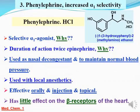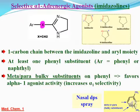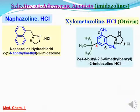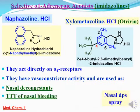الـ Naphazoline بيكون له تأثير عالي على الـ alpha وليه little effect على الـ beta. مفيد في علاج bleeding، يبقى nasal decongestant وفي علاج الـ nasal bleeding. Available as nasal drops وده acting على الـ alpha-1 receptor.